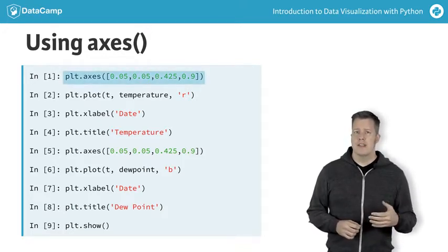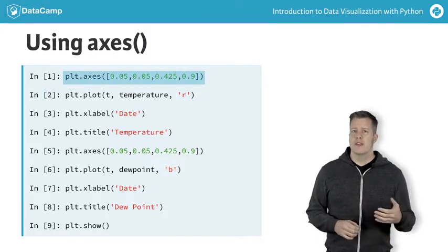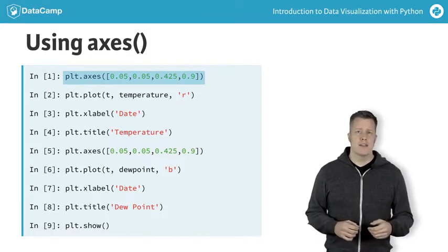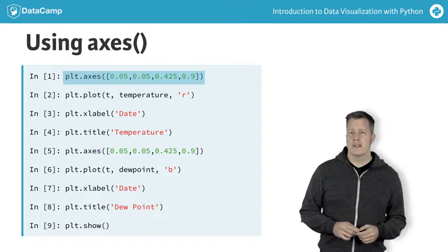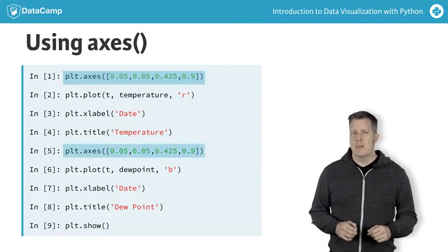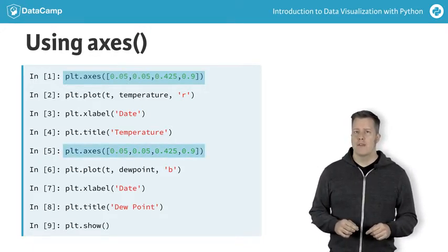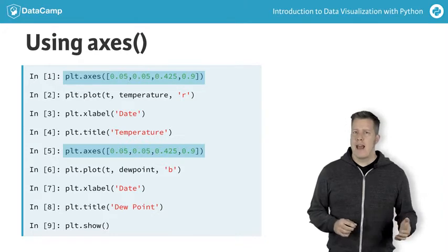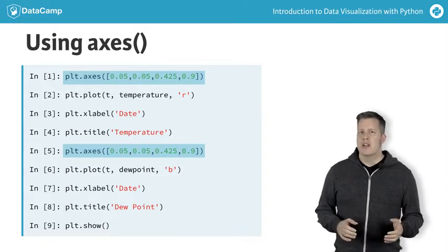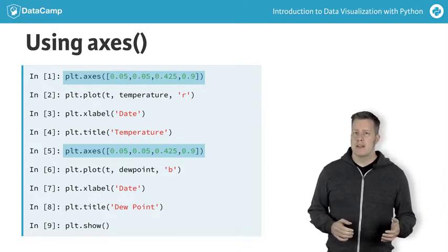Thus, the first line constructs axes on the left side of the figure window, and the subsequent three lines create a curve, an axis label, and a title within those axes. The second axes command makes new axes on the right of the figure, and also makes those axes active. This means the next three commands place objects in the second axes, not the first.